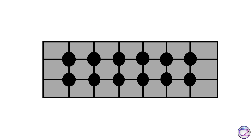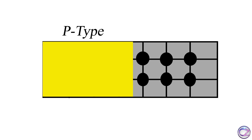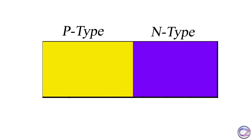So, in the division of the diode, one side is P type and another side is N type.